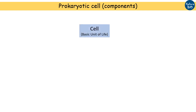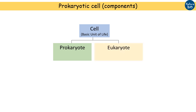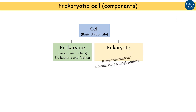Cells are the basic structural and functional unit of life. Based on the type of cell, every organism can be classified either as a prokaryote or as a eukaryote. Prokaryotes means they lack true nuclei and includes bacteria and archaea. On the other hand, eukaryotes possess true nuclei and comprises of animals, plants, fungi and protists.